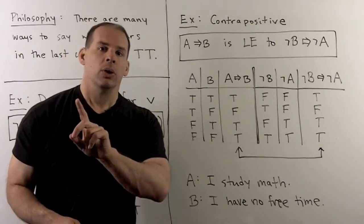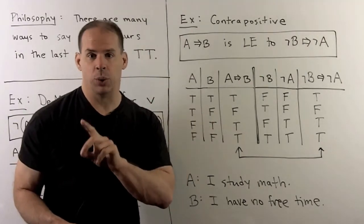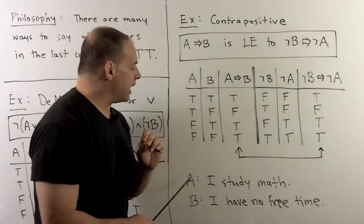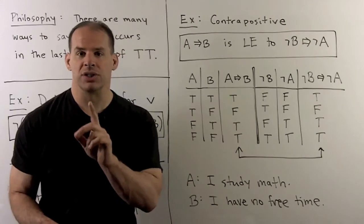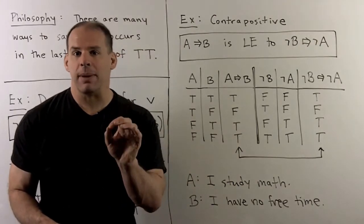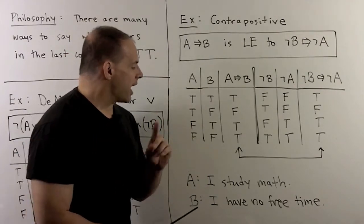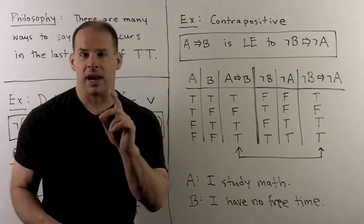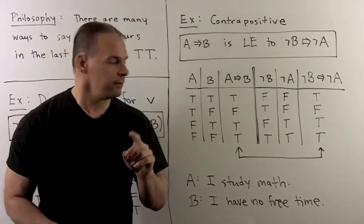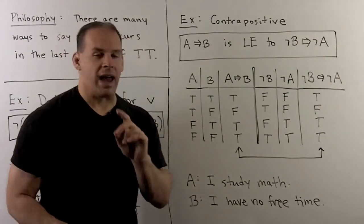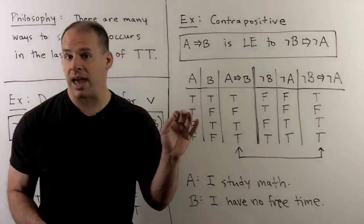How do we think of the contrapositive in terms of cause and effect? Let A be 'I study math' and B be 'I have no free time.' A implies B says: if I study math, then I have no free time. The converse says: if I have no free time, then I study math — not quite the same. The contrapositive says: if I have free time, then I'm not studying math — and that is equivalent to A implies B.